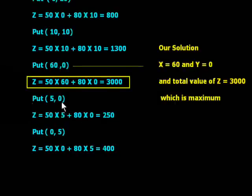And the next corner point, 50 into 5 plus 80 into 0, I am putting in the objective function and this is 250. And again I am putting 0, 5 and this is 400.